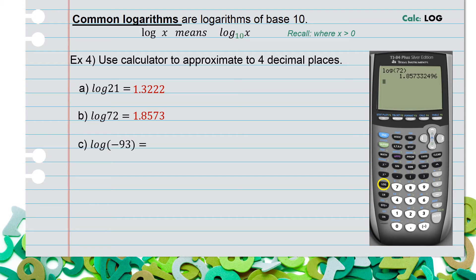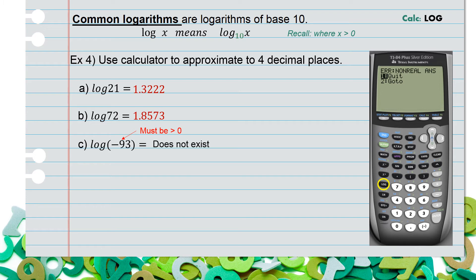For part c, we're being asked to find log of negative 93. Type it in the calculator, click enter, and notice — that doesn't look like the other ones. You can only take a log of a positive value. Negative 93 is not positive, which means this value does not exist.